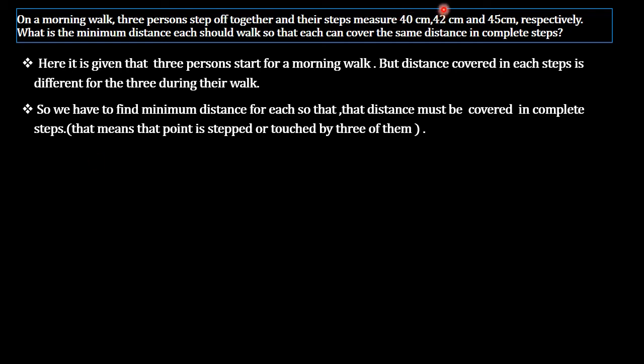For example, consider 80 cm. The first person walks 40 cm in his first step and is at 80 cm in his second step. The second person will be at 84 cm and the third at 90 cm. So 80 cm is only covered by the first person, not the other two. We need to find the minimum distance that all three will cover.